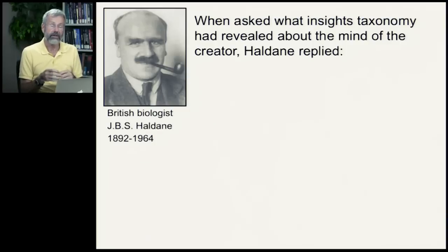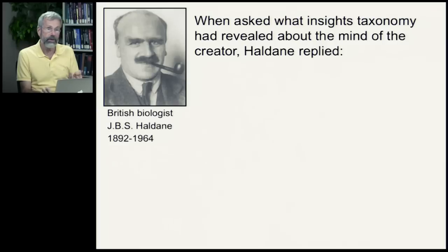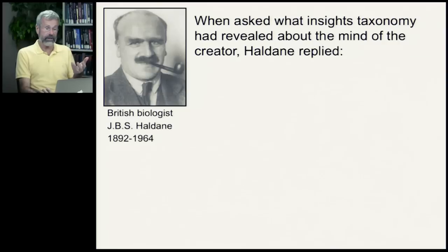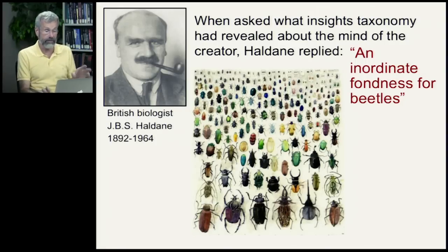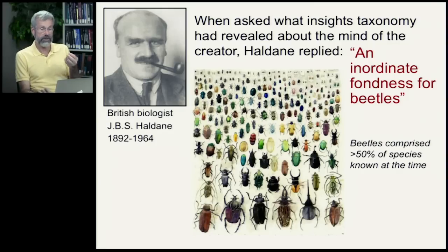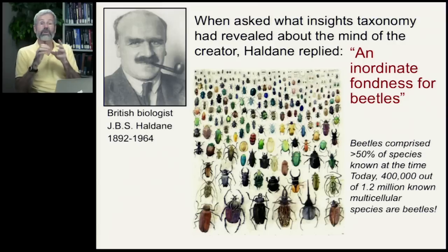Later on, Linnaeus's view of trying to understand the mind of the Creator based on taxonomy was dismissed and is not accepted by modern evolutionary biologists. The first person to say something humorous about this that has stuck with us was the British biologist J.B.S. Haldane, who lived until 1964. When asked what insights taxonomy had revealed about the mind of the Creator, Haldane replied: 'an inordinate fondness for beetles' — because if a creator had simultaneously made all living things, he sure made an awful lot of beetles. At the time beetles comprised about 50% of known species, and even today about a third of all multicellular species are beetles. But we don't think that's anything special from the mind of the Creator — rather, as we'll see, it tells us a lot about the evolutionary process called speciation, which will be the topic of a later lecture.